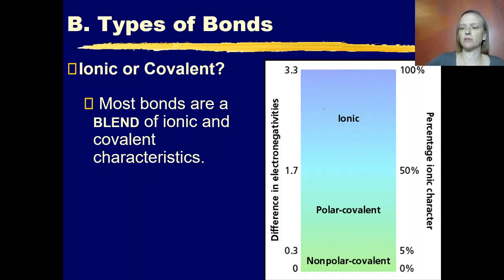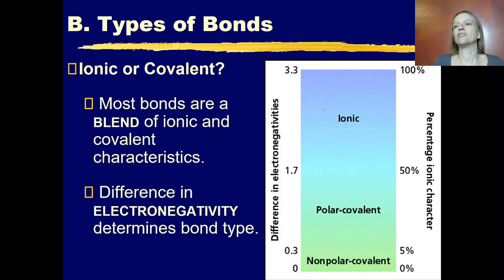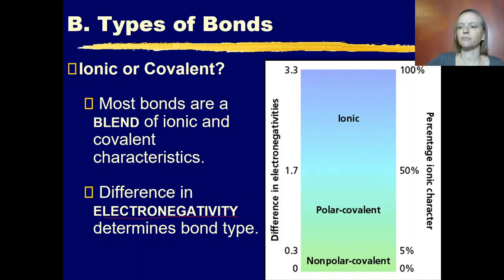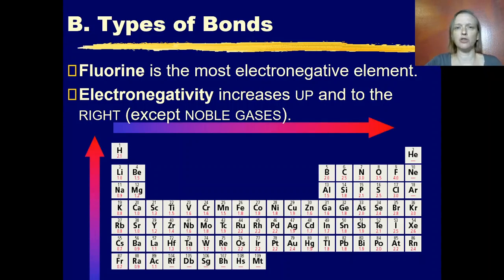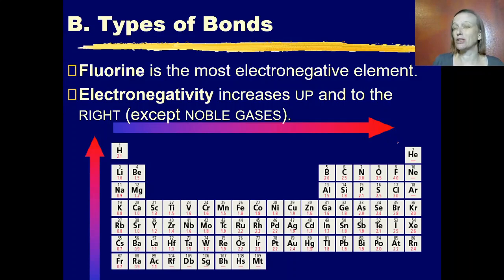It's this spectrum as you see here in the chart. What determines where a molecule falls on this chart is the difference in electronegativity of the atoms. Electronegativity increases as you move up and to the right on the periodic table, but you don't include the noble gases. So fluorine is the most electronegative element.